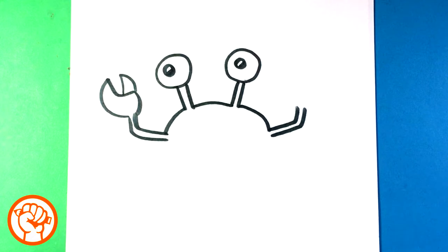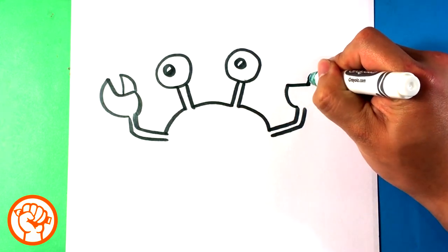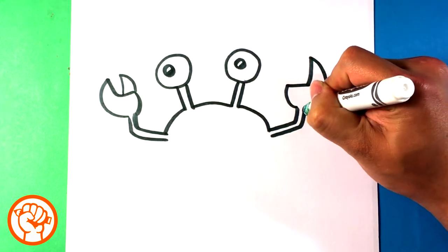And have a little extra shape there for the claw. Repeat the exact same shape on the other side.